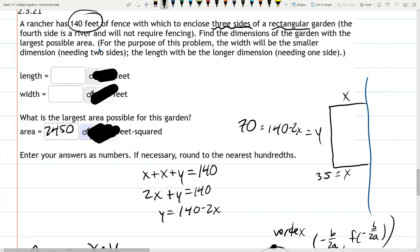And let's see. The width will be the smaller dimension. So the width is 35. The length is 70. And I just took, where was that? Somewhere. Width will be the smaller dimension. So there we go.